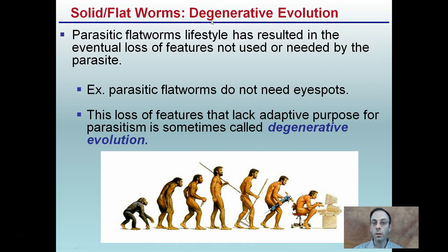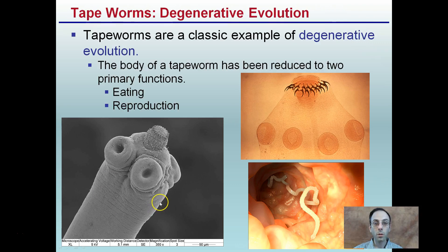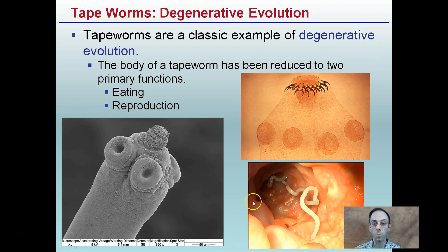Flatworms have gone through a process called degenerative evolution. Parasitic flatworms' lifestyles resulted in the eventual loss of features not used or needed by the parasite. For example, parasitic flatworms don't need eye spots. The loss of features that lack adaptive purpose for parasitism is called degenerative evolution — think of gaining features and then losing them over time because those advancements are not needed. Tapeworms are a classic example: the body has been reduced to two primary functions, simply eating and reproducing. They don't need any other specialized features.